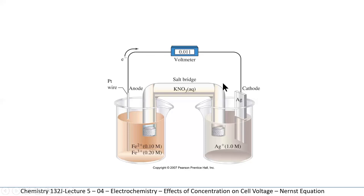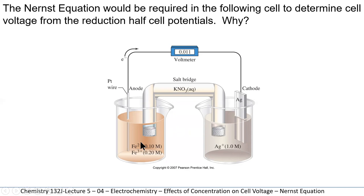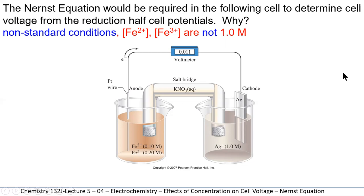Looking at this particular cell made up of two half cells, it is a completed electrochemical cell. The voltage is given, and you can see that oxidation is happening on the left and reduction is happening on the right. This is not a standard cell because the concentrations of our ferrous and ferric ions are not one mole per liter, so we could use the Nernst equation here.